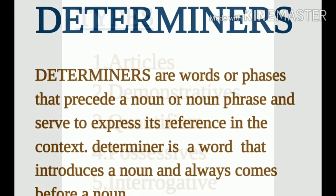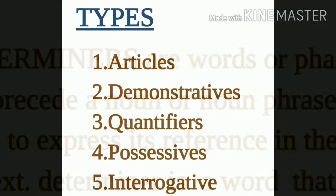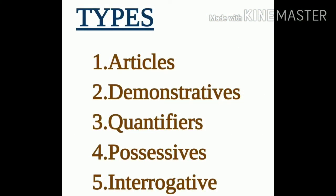There are different types of determiners in English. First is articles, next is demonstratives, quantifiers, possessives, and interrogative determiners.